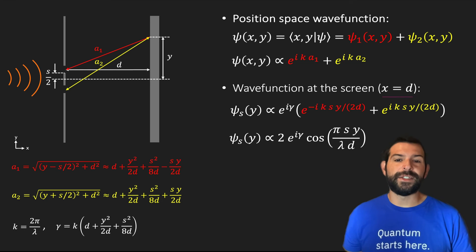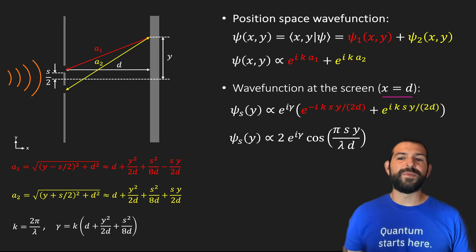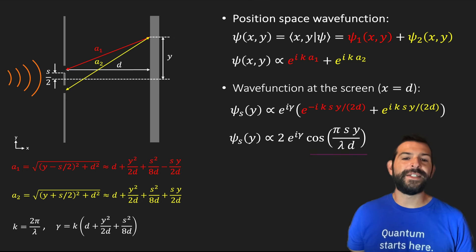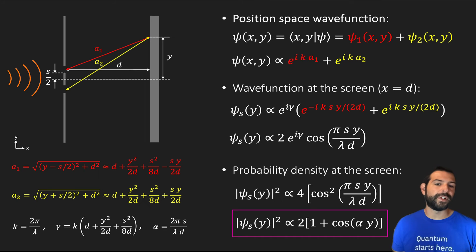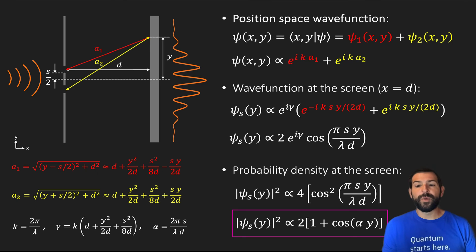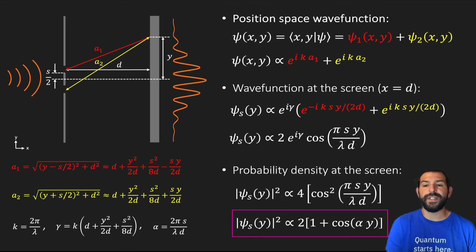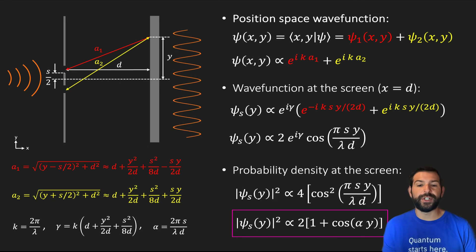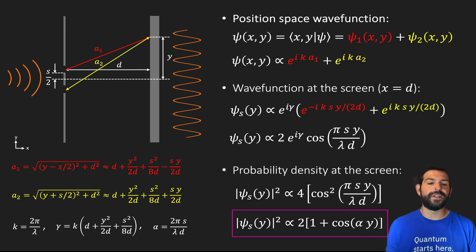If we evaluate x at the screen distance d and assume this value is much larger than the separation between the slits, we can simplify our equation and show we get a cosine term, which after computing the probability density by taking the square of our wave function, gives us an interference pattern at the screen as a function of y. Due to our simplification — assuming an incoming plane wave and ignoring single-slit diffraction effects — we won't see the exponential decay as we move away from center, but instead simply get the oscillatory term, which is all we need to understand why the interference exists.